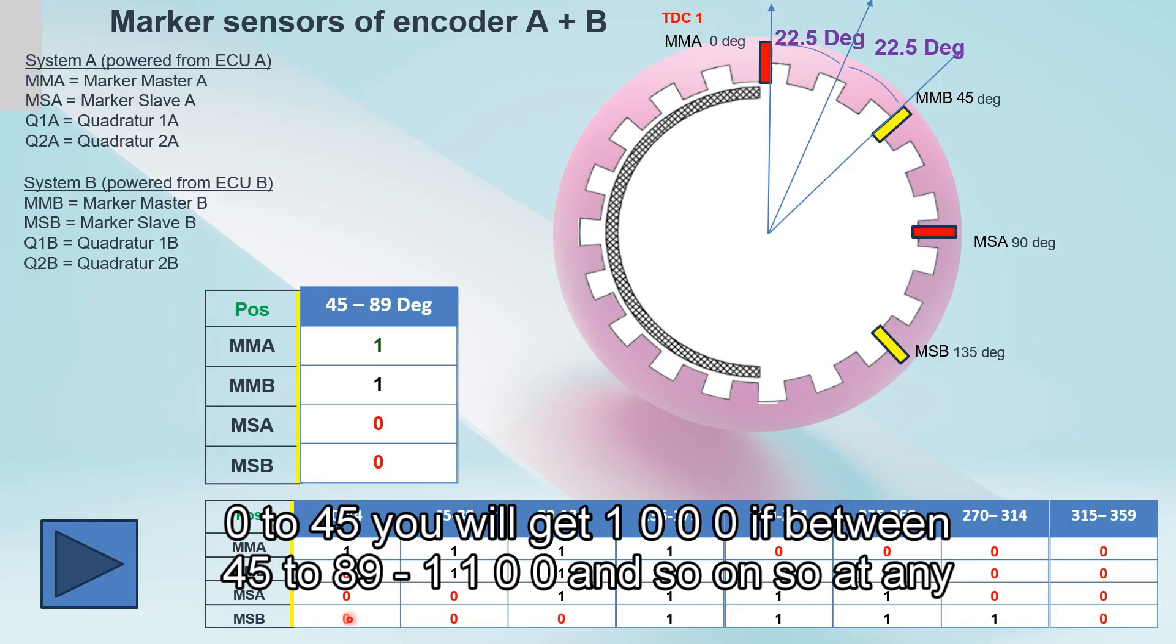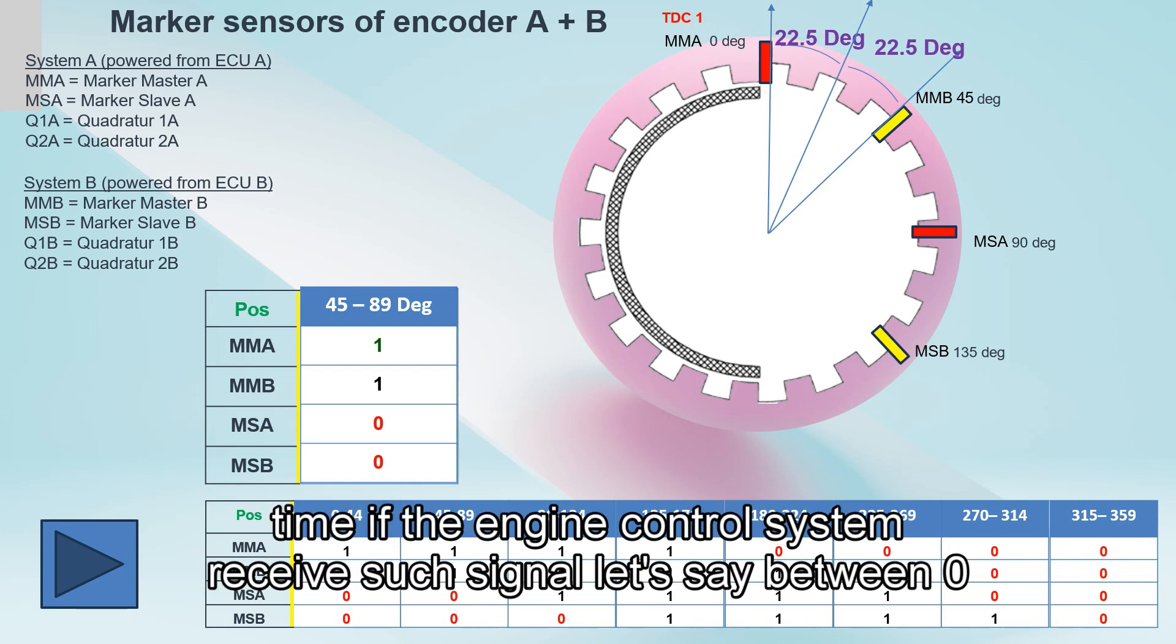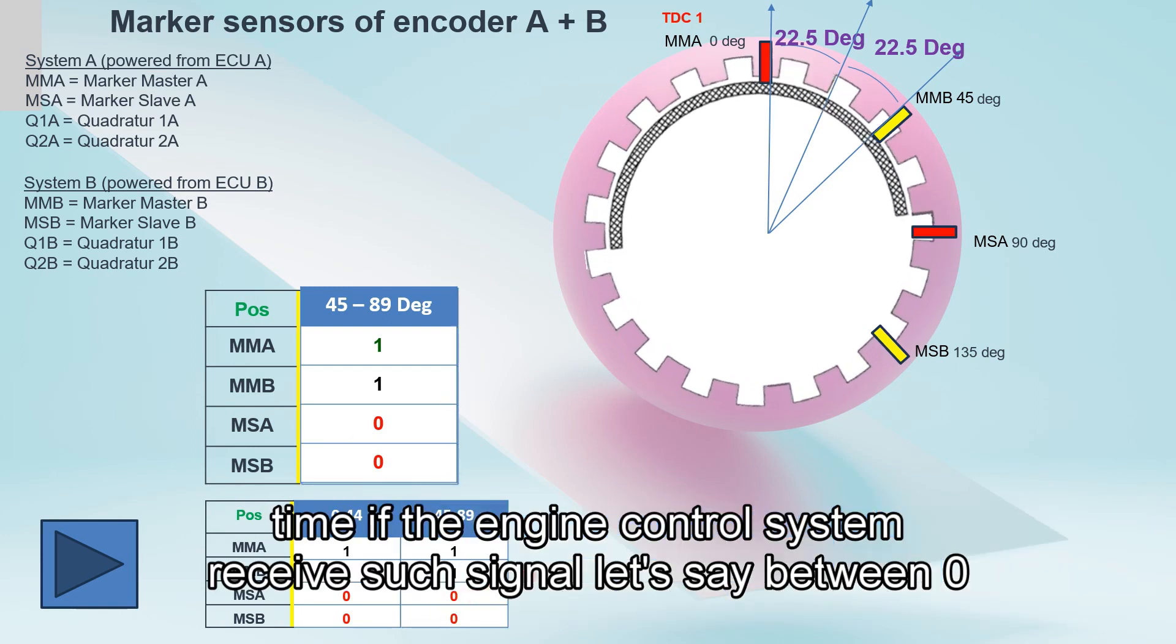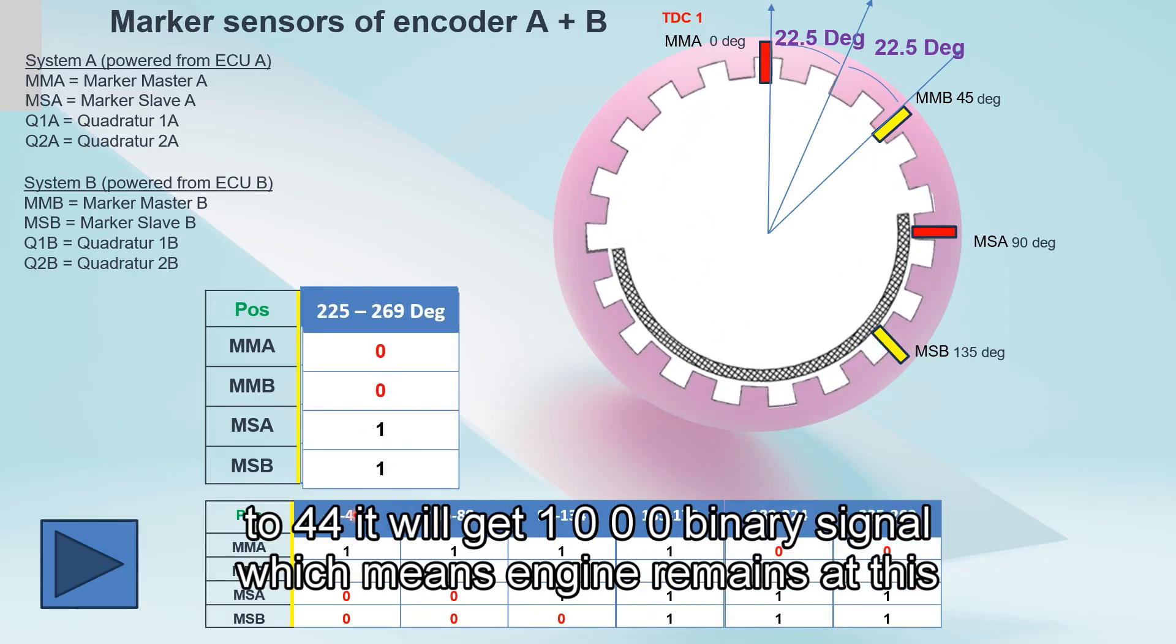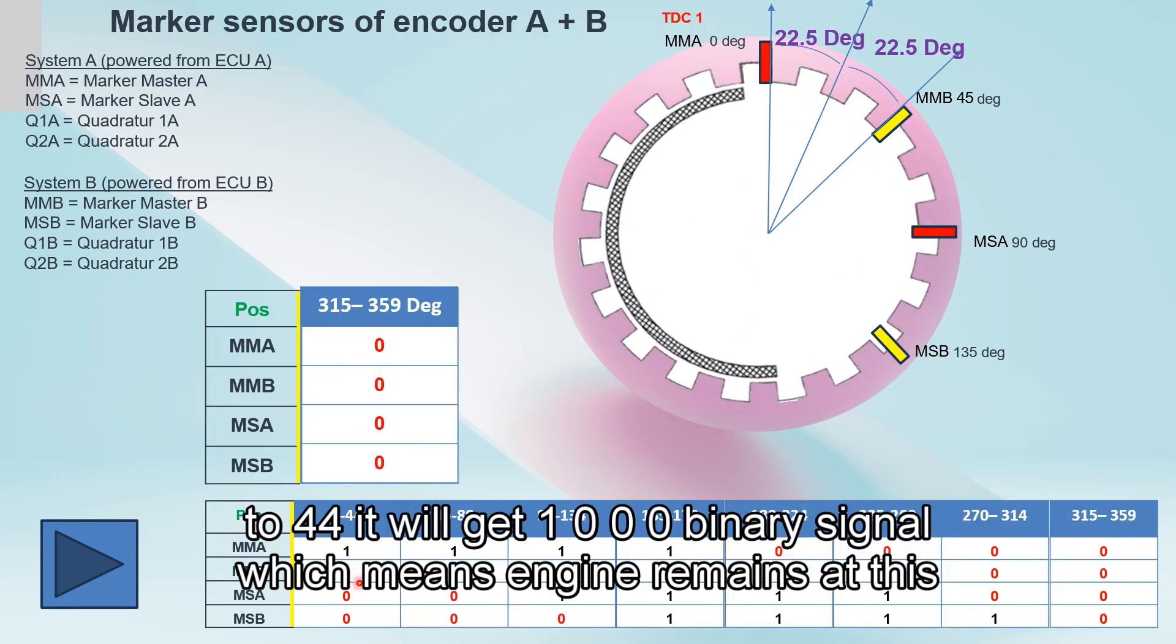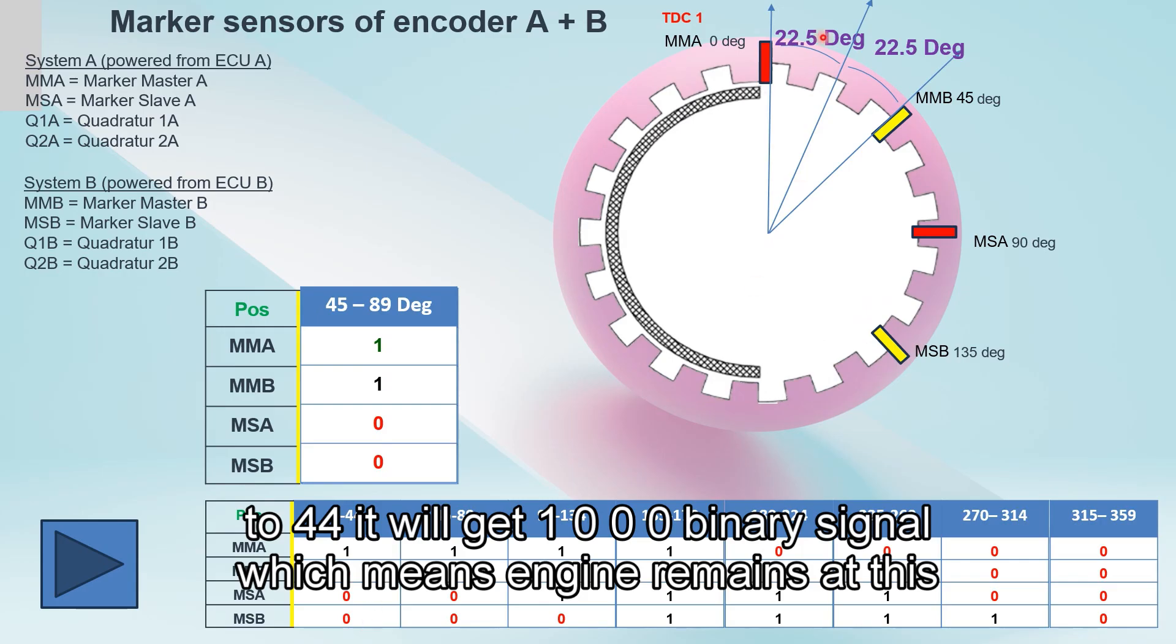At any time, if the engine control system receives such signal, let's say between 0 to 44 degrees, it will get 1-0-0-0 binary signal, which means the engine remains at this position.